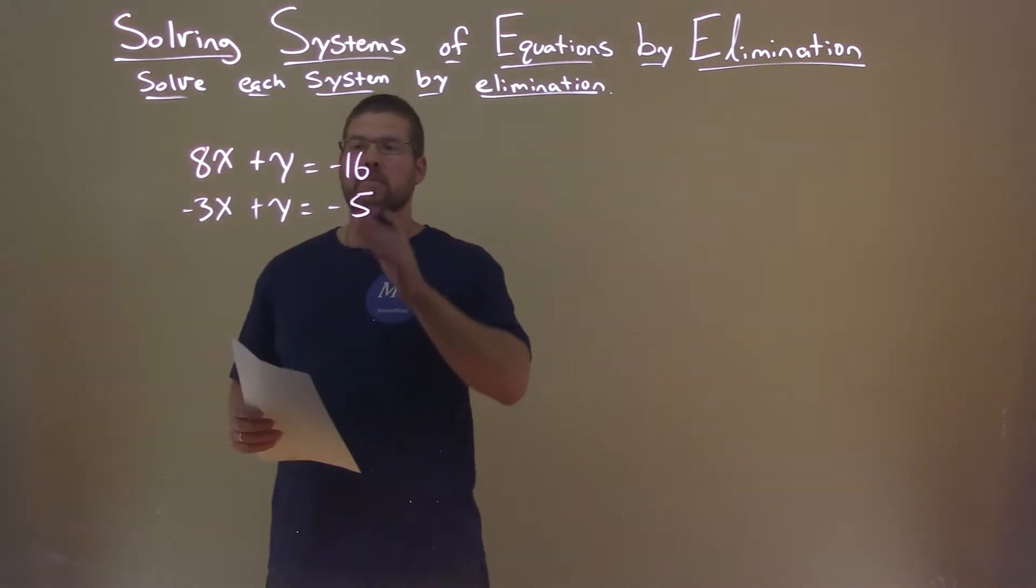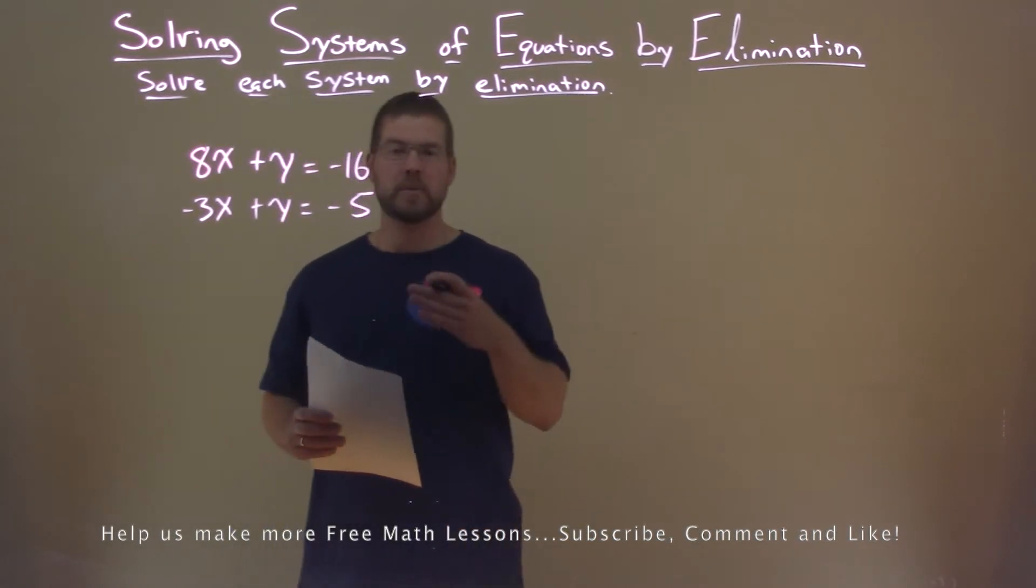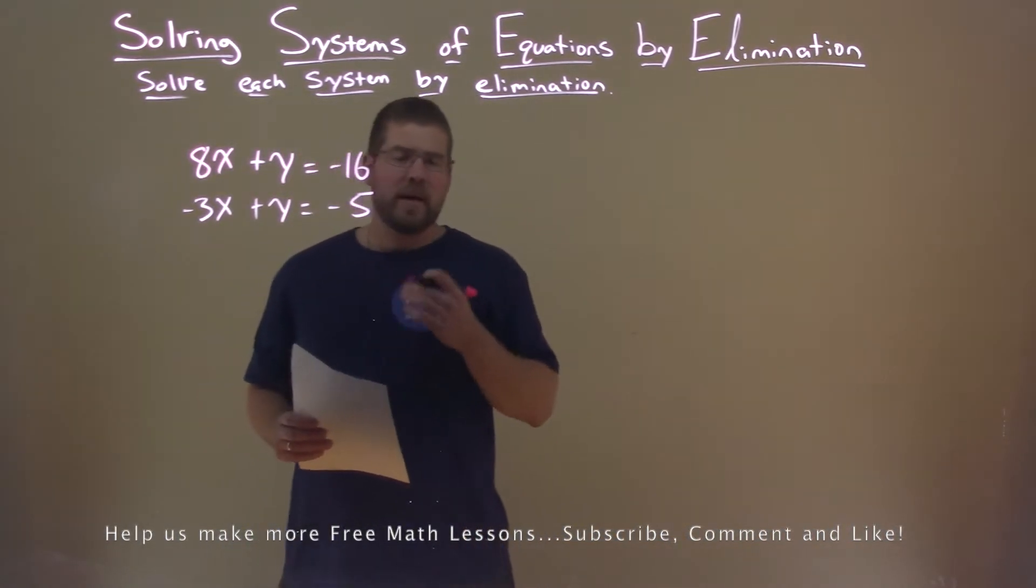So we're given 8x plus y equals negative 16, and negative 3x plus y equals negative 5. And we want to solve this by elimination.